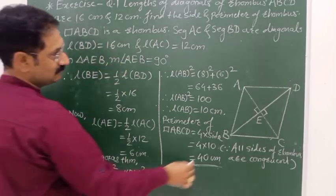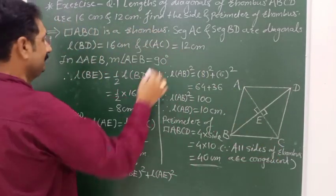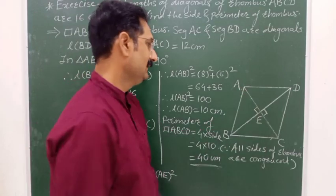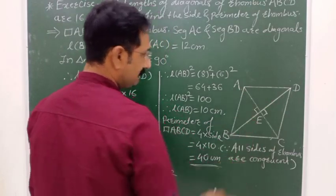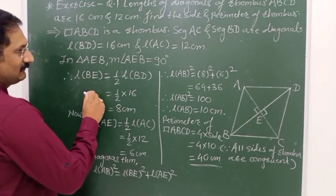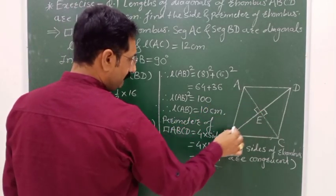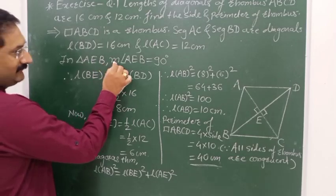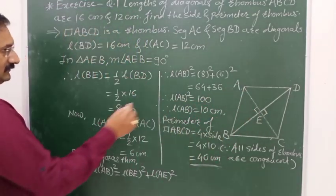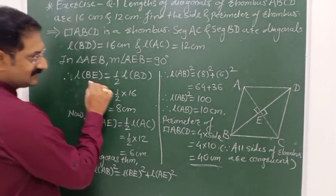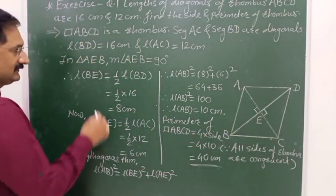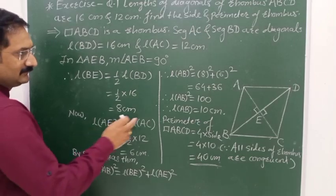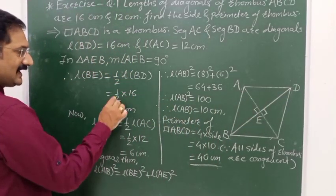The large diagonal BD is 16 cm and the small diagonal AC is 12 cm. Since the diagonals are perpendicular bisectors of each other, we can use this property to find the side length.